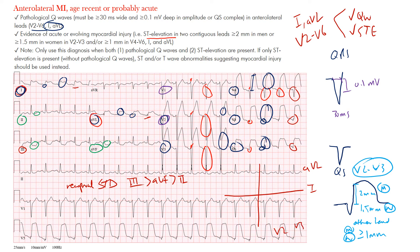This makes sense anatomically: leads I and aVL cover the anterolateral portion of the heart, while leads III, aVF, and II are on the opposite side. The deepest ST depression is in lead III because it is most opposite to aVL, which has prominent ST elevation. So for anterolateral MI, look for Q waves and ST elevation in I, aVL, and V2–V6, with possible reciprocal changes in inferior leads.